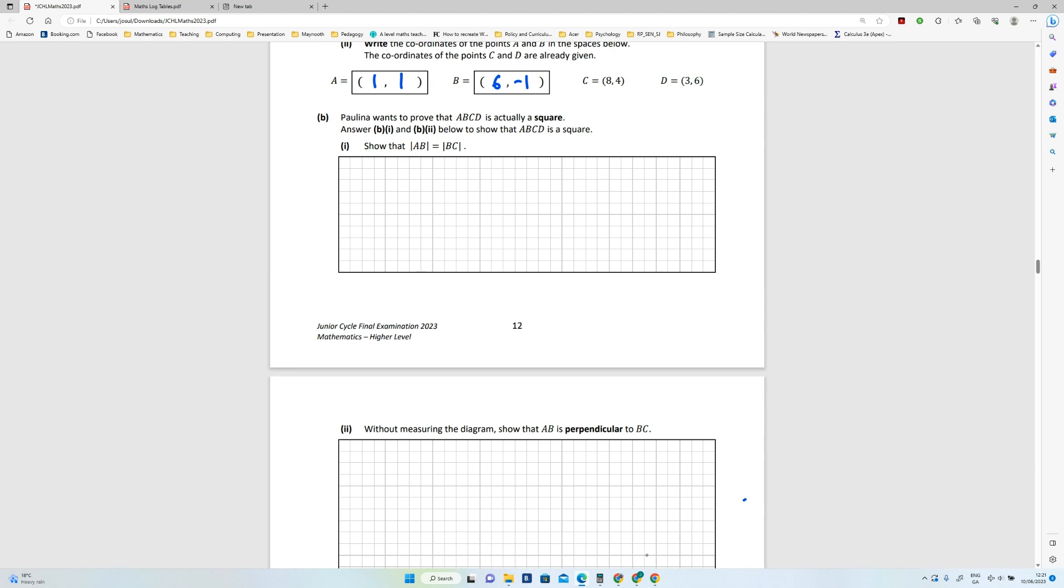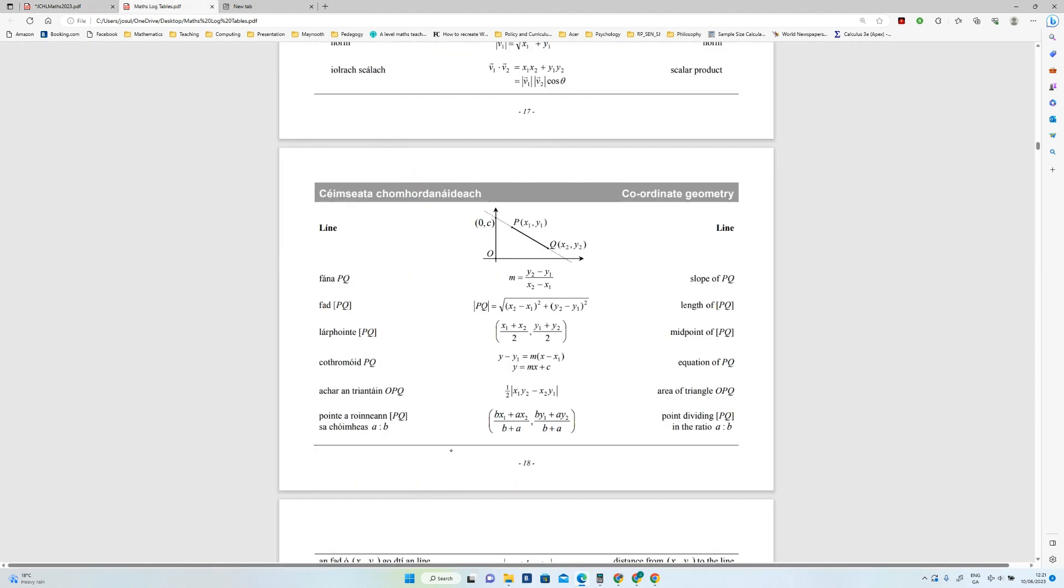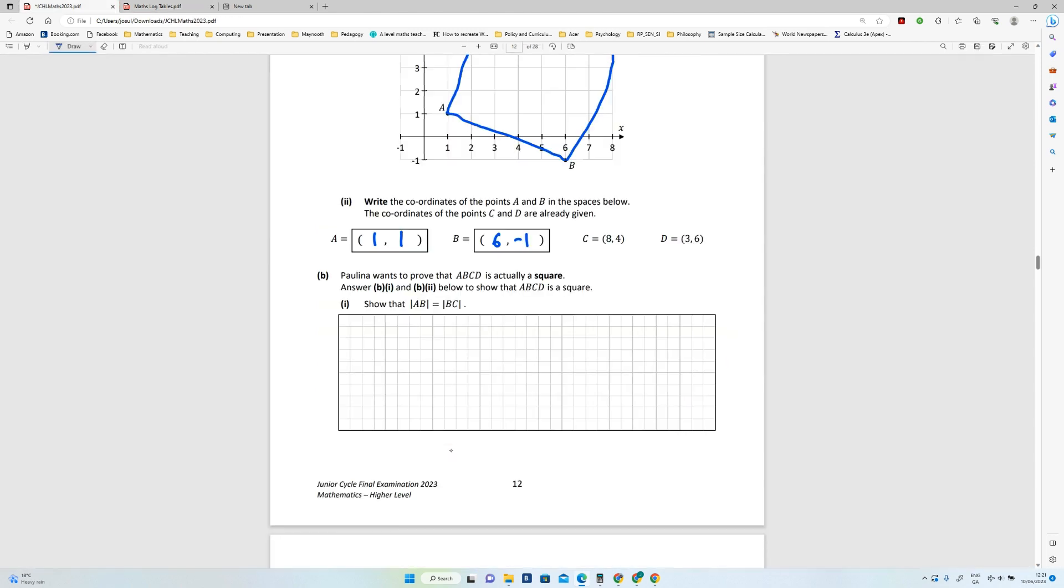Pauline wants to prove that ABC is actually a square. Answer the next two parts to show that it is a square. So show that the length of AB is equal to BC. So let's have a look. If we prove that, and these are right angles, then we know that it is a square. So the first part is to prove AB equals BC. We go to the log tables and get the formula for the length of the line, which is this one here, okay, page 18. So I'll just write that here: square root of (x2 - x1) squared plus (y2 - y1) squared.